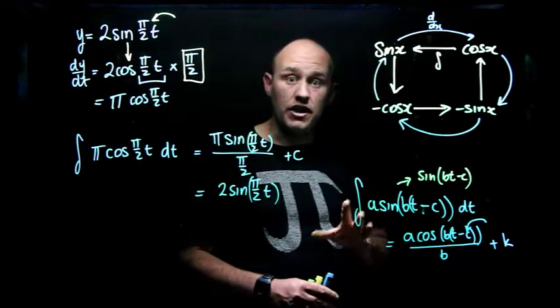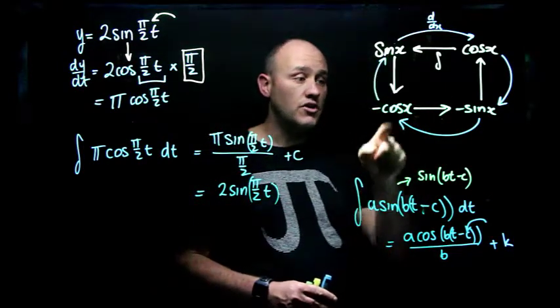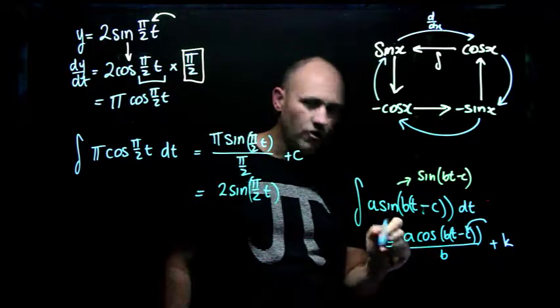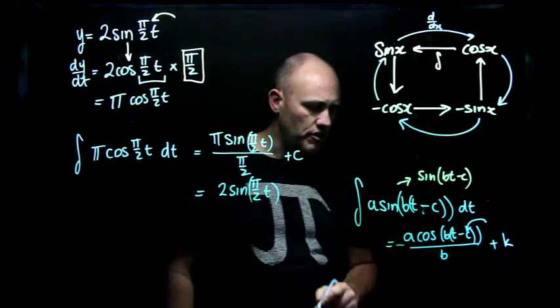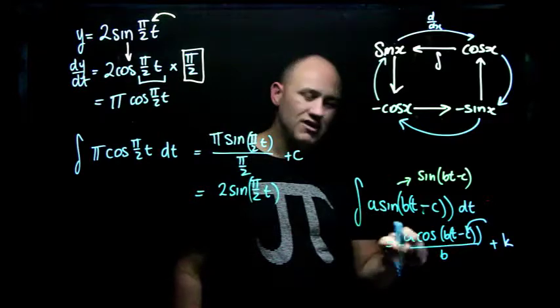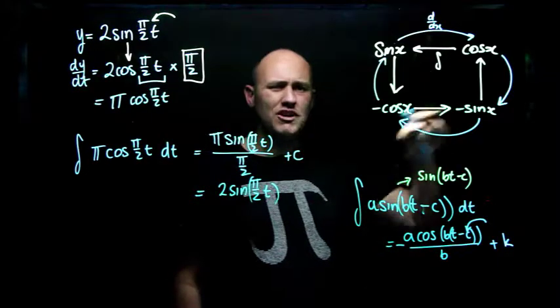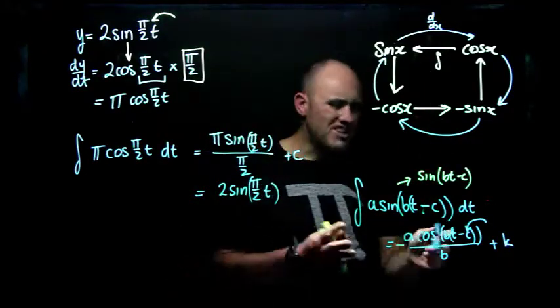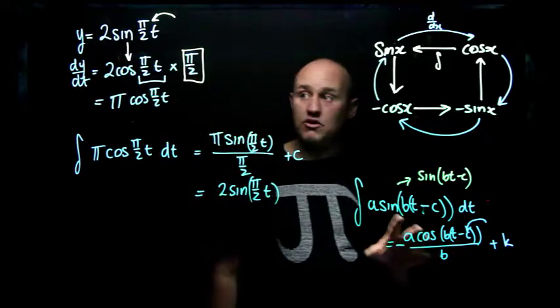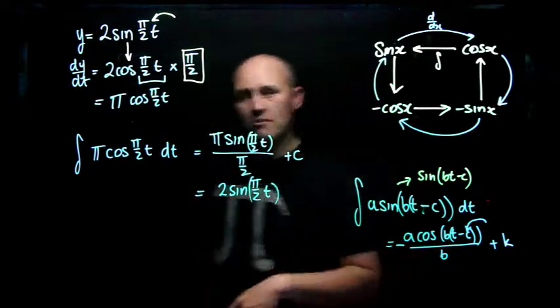And of course, you might be thinking right now, hold on a second, if I integrate sine, I get negative cos, so of course we've got to be aware of that and just pop a negative at the front. If this were a cosine, that would become a positive sine. Just going to make sure we get that negative in the right spot. But that's the rule. What I'm going to do is work through a couple of things, and we'll do one more example.